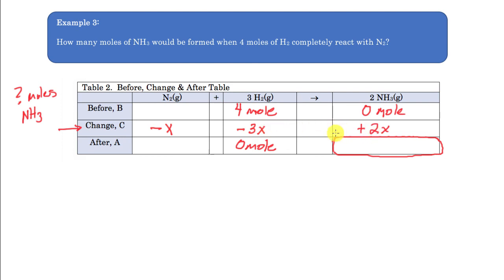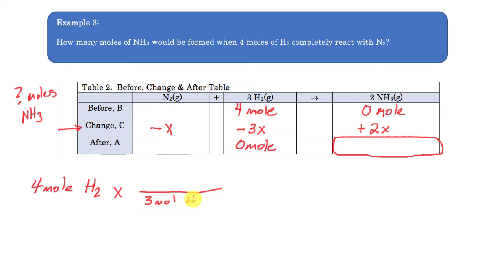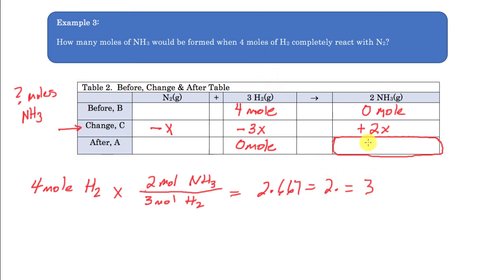There's a 2-to-3 ratio between hydrogen and ammonia. Starting with four moles of hydrogen, I can use dimensional analysis: four moles H₂ times (2 mol NH₃ / 3 mol H₂) gives 2.667 moles of ammonia. With one significant figure, that rounds to approximately three moles of ammonia formed.